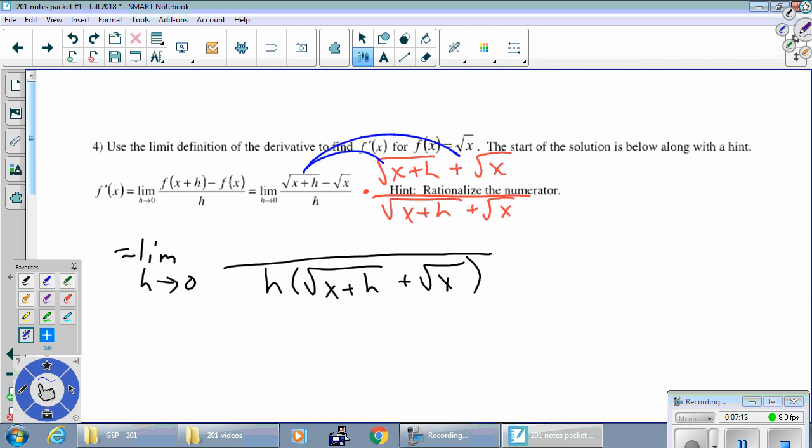So foil here, lobster claw, however you do it. So first times first, that's x plus h, the radicals cancel. The outers are radical x plus h times radical x. And the inners are the same thing, but negative. Negative radical x, x plus h times radical x. So they cancel.